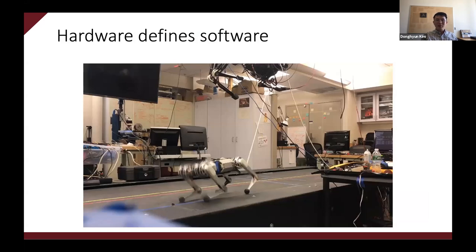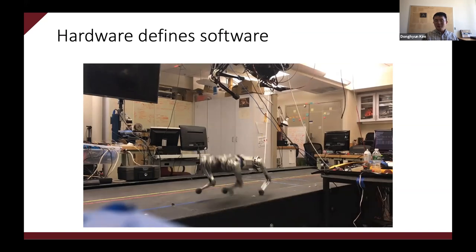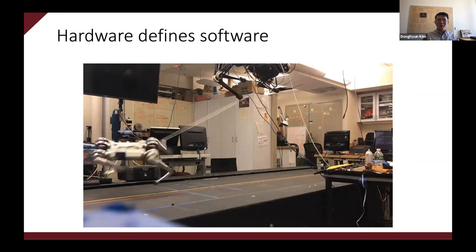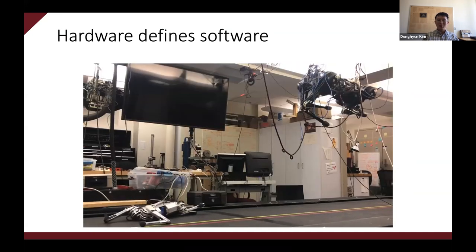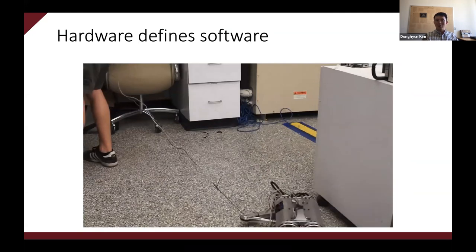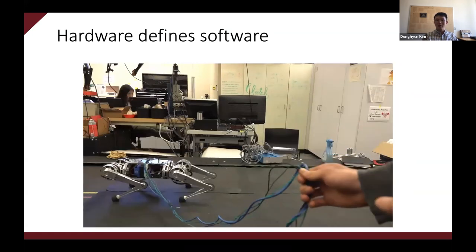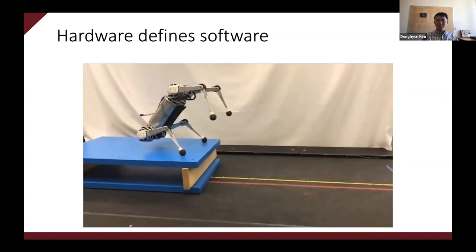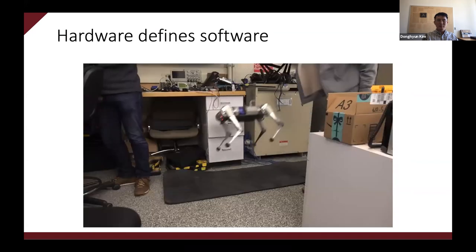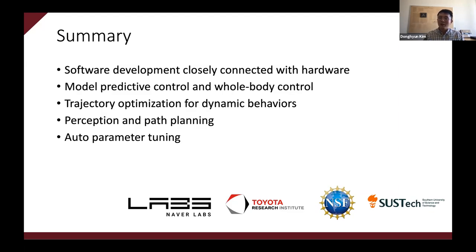Although I talked a lot about software, software must be determined by hardware. The reason we can do automatic parameter tuning is the miniaturized, robust hardware platform. To show hardware robustness, here is a compilation of failure videos — Mini Cheetah pulled off a treadmill, sliding and even hitting the ground with its head. The only thing we need to do is reboot the computer and try the next experiment. That's all I prepared today — thank you for your attention and happy to answer questions.